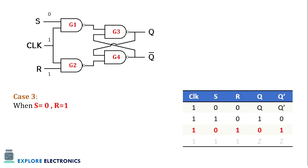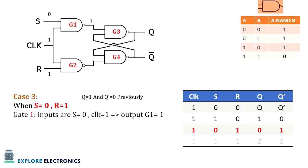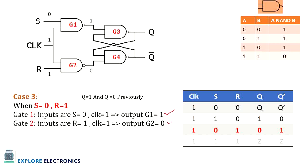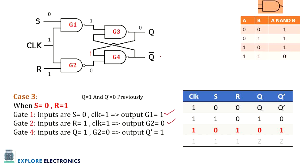Case 3: S is 0 and R is 1. From the previous case, Q is 1 and Q bar is 0. With S=0 and clock=1, Gate 1 output is 1. With R=1 and clock=1, Gate 2 output is 0. For Gate 4, the previous Q=1 and G2=0 give inputs 1 and 0, so Gate 4 output is 1, making Q bar=1. This Q bar=1 fed into Gate 3 with G1=1 gives output 0, so Q becomes 0.